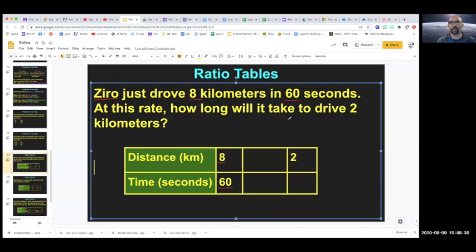At this rate, how long will it take to drive two kilometers? So, the table is very handy. We can just say, what do we have to do to eight to make it a two? Well, eight divided by four equals two. So if we divide by four there, we got to do the same thing here. So 60 divided by four is 15. So now we know that it will take 15 seconds to drive two kilometers. You get how that works?